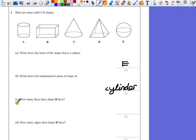Part C. How many faces does shape B have? A face is the flat side of a 3D shape. So if we look at B, which is a cuboid,